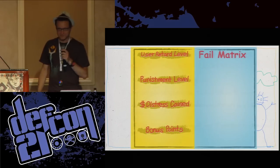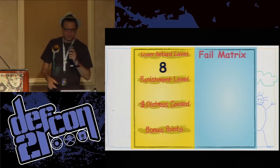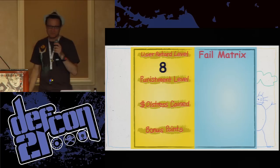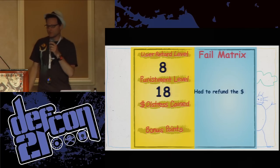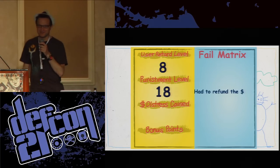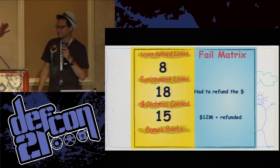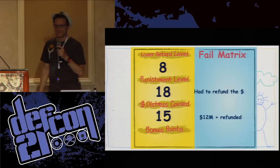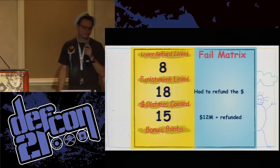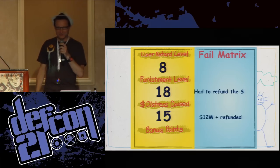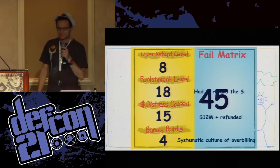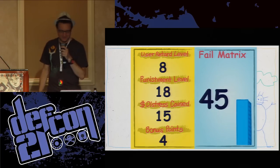Let's look at the fail matrix. I didn't give the user retard level too many points because it was a billing administrator — most average people don't really know what's going on inside a database. However, they had to refund the money over the last four or five years — about $12 million. Bonus points for a systematic culture of over-billing. They get 45 bonus points.